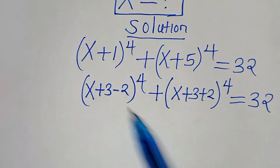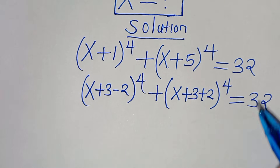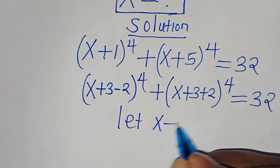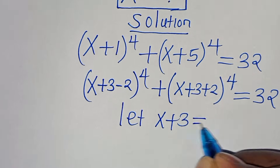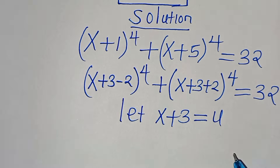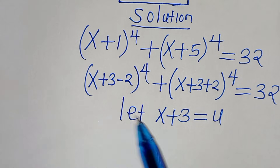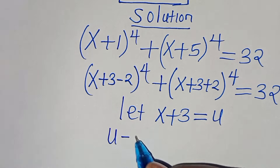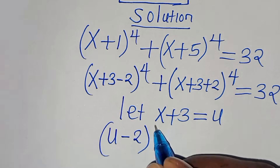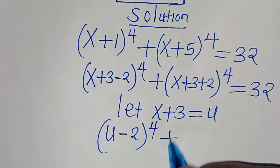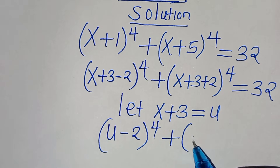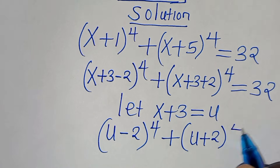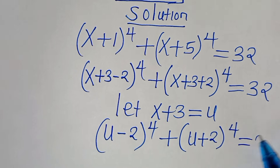Now we have x plus 3 appearing in both terms, so we let x plus 3 be equal to u. Substituting, we have u minus 2 to the power of 4, plus u plus 2 raised to the power of 4, this is equal to 32.